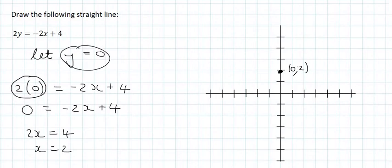So when y is 0, then the x value is 2. So that will be somewhere over here where x is 2 and y is 0. And there we have it, now we can draw a straight line.